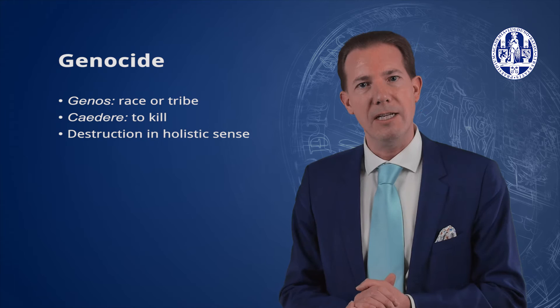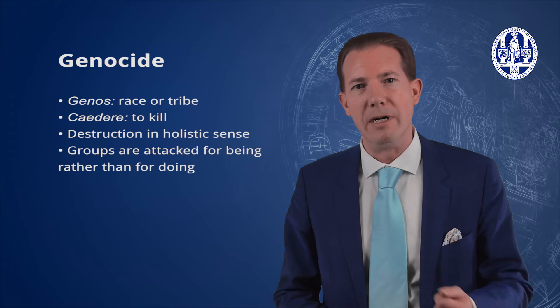One of the distinctive features of genocide is that groups are attacked for being rather than for doing. Based on the influence of Lemkin, the Nuremberg prosecution included genocide in its indictment. However, the crime was not specifically mentioned in the judgment. Instead, the Holocaust was punished under crimes against humanity, a crime that we will discuss in the next video.